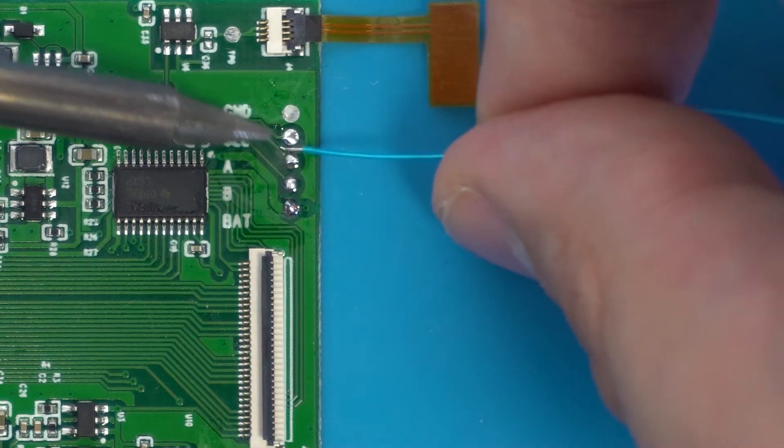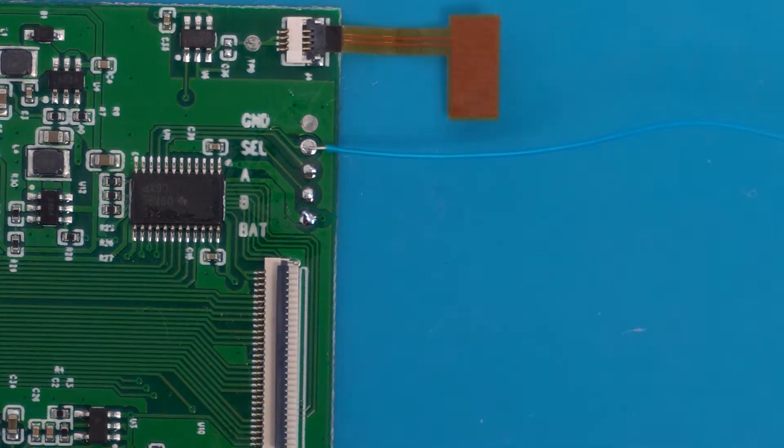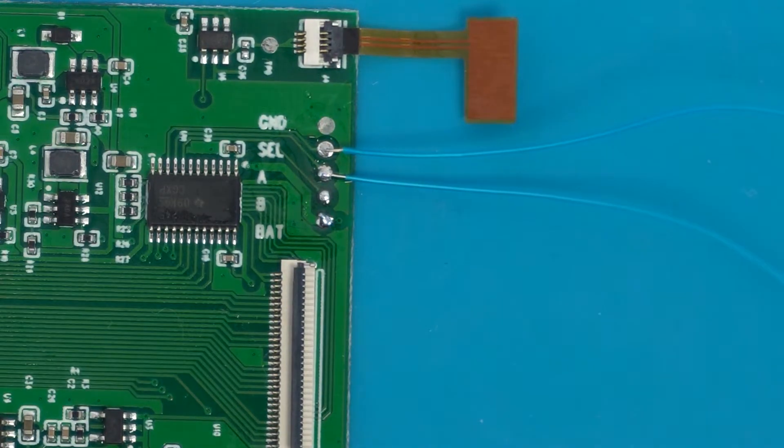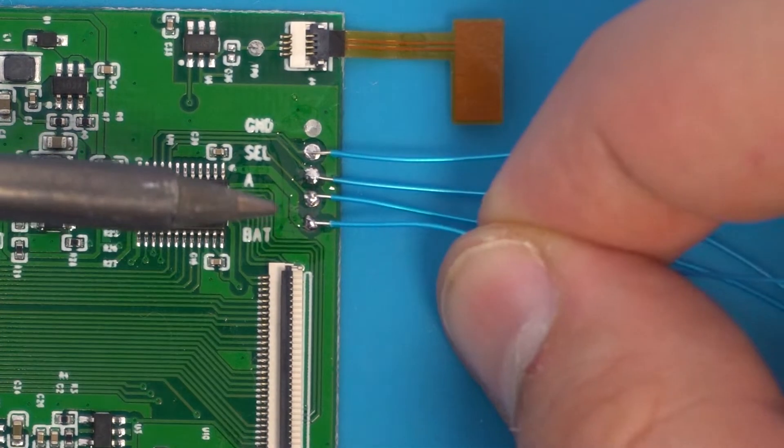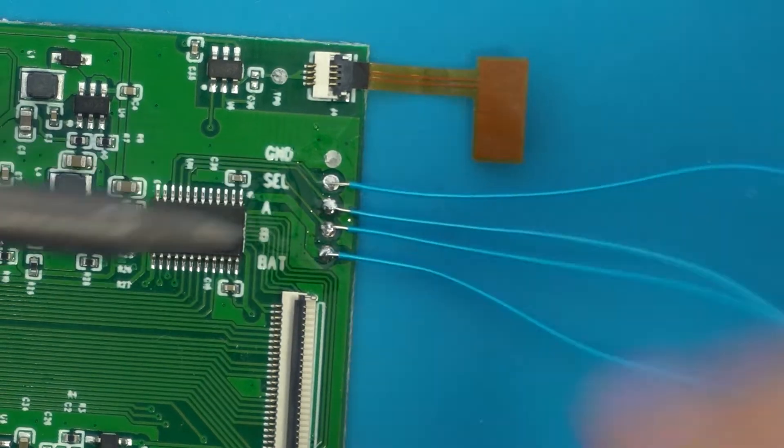For this video, I'll be using 30 gauge Kynar wire. However, the regular wire that comes with the kit will also work. Once you've got your wires soldered to the control board, you can reconnect your screen and drop it into the shell.